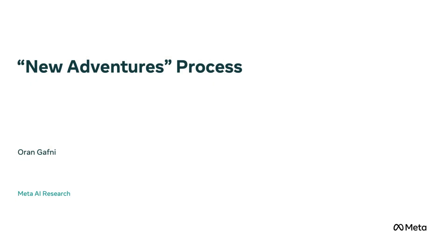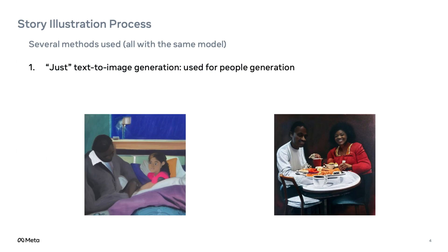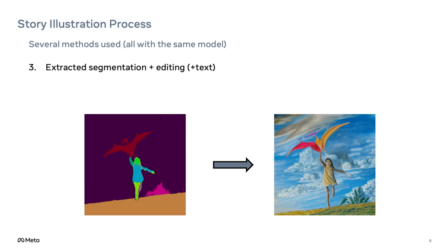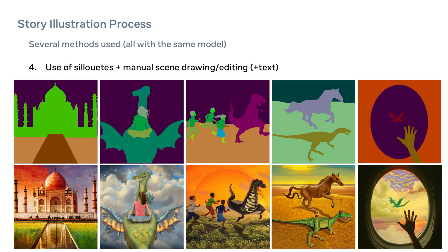I've used several methods here to generate the images. The first was just using text-to-image generation, so not using any scene layout — that was used for people generation here. Another method was manually drawing the scenes and prompting text as well; I just drew that using an image editing tool. It's quite nice, but proved to be hard later on. Another option was using the segmentation extracted from an image. You can see on the left the extracted segmentation plus editing. After extracting, I added the pterodactyl kite over the segmentations I've extracted from the image. What I mainly used for most of the images is silhouette templates I found, and then I manually added or edited the layout. That's it. Thank you for listening.